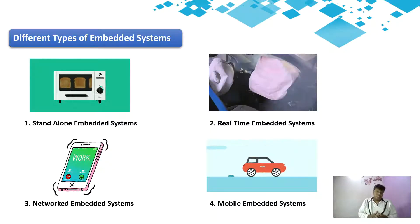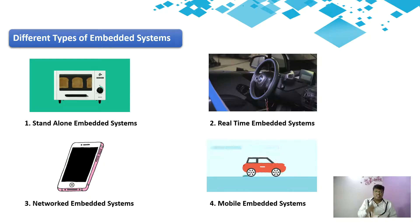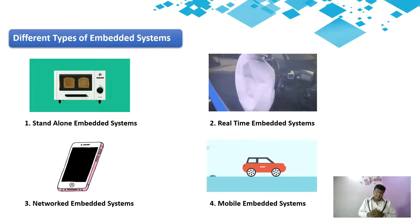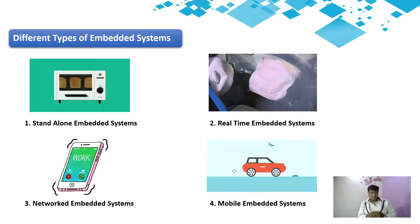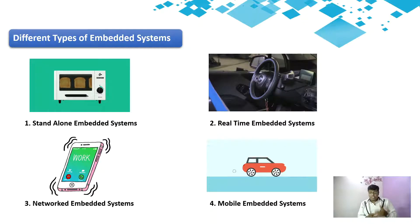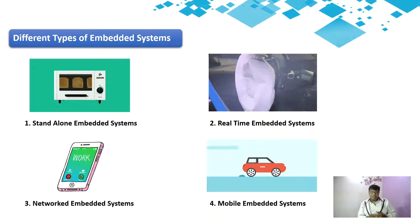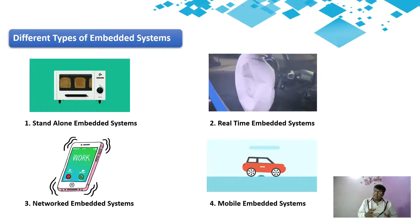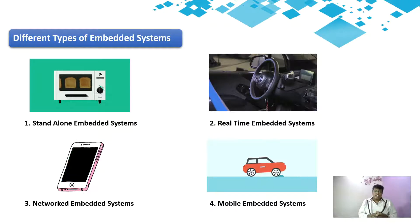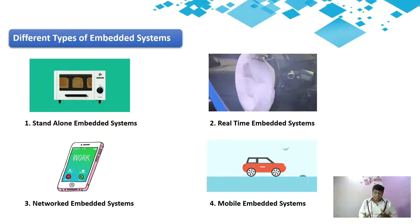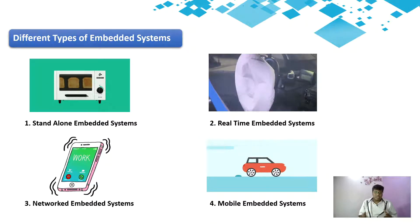The fourth type is the mobile embedded system, which is the most preferred due to portability. These systems are easily carried from one place to another. One example could be an automotive car or even a Bluetooth MP3 player. These kinds of systems are easily portable from one place to another.